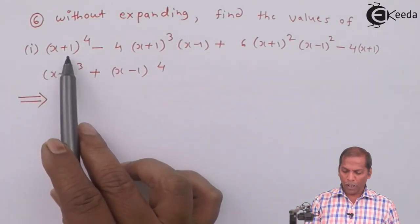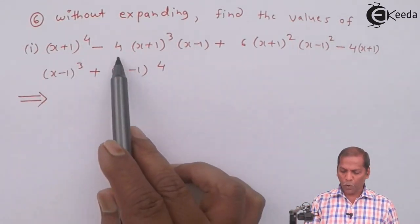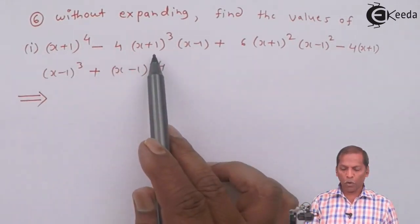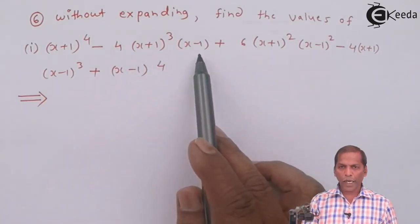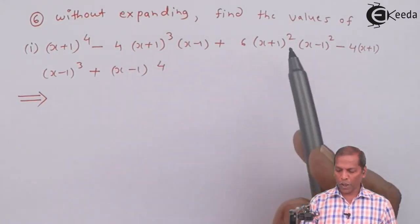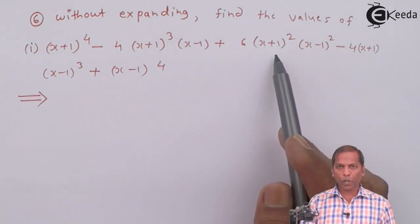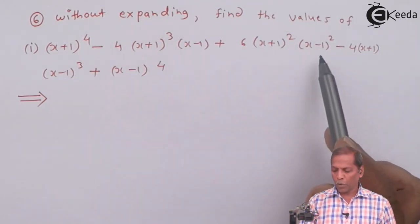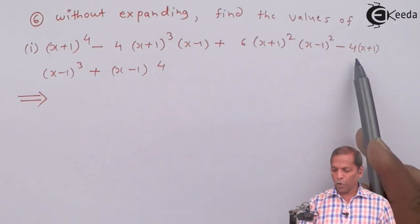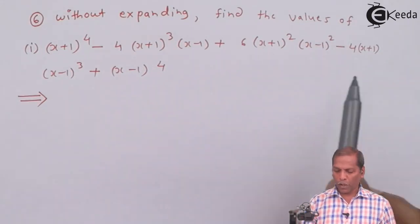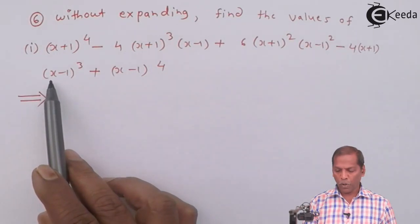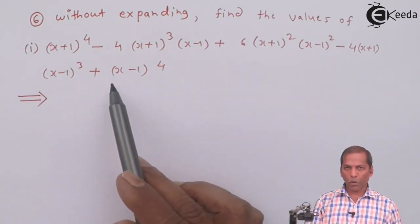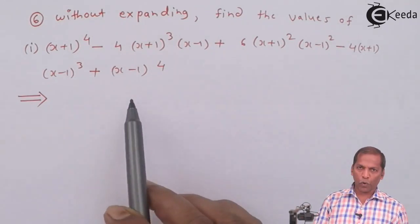(x+1)^4 - 4(x+1)^3(x-1) + 6(x+1)^2(x-1)^2 - 4(x+1)(x-1)^3 + (x-1)^4.